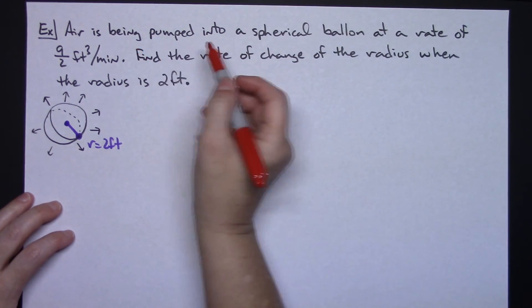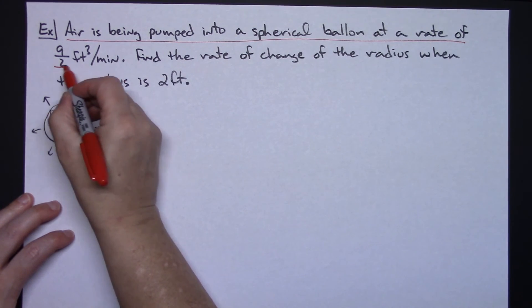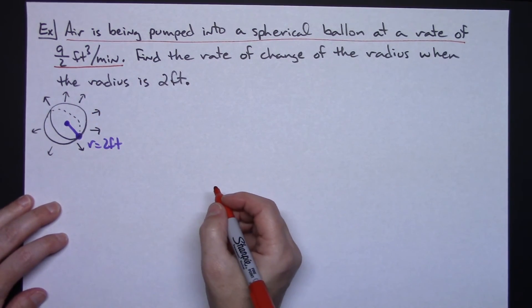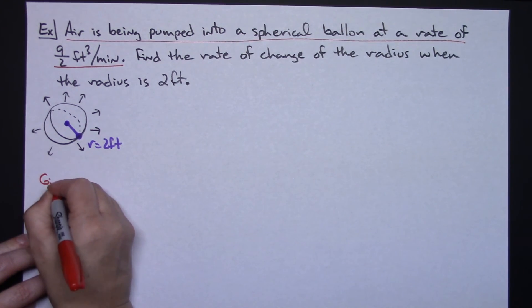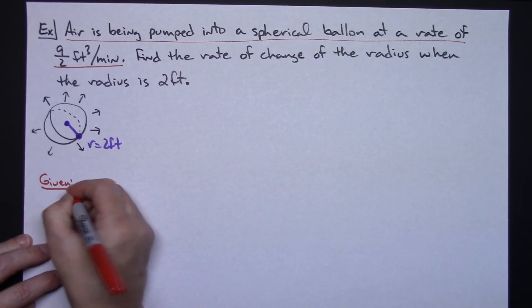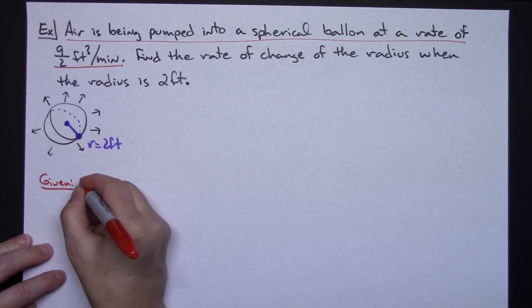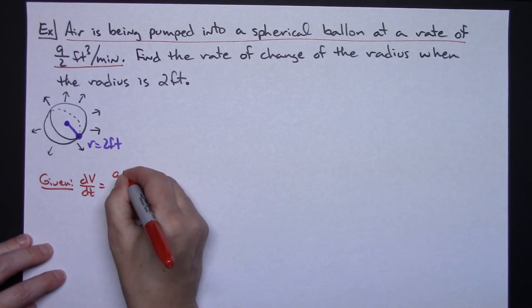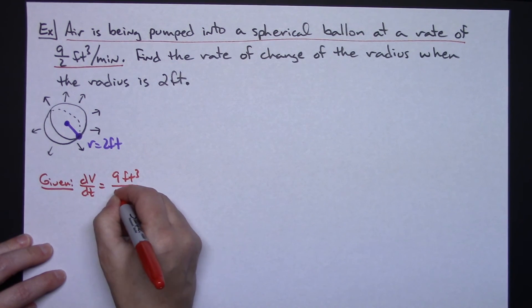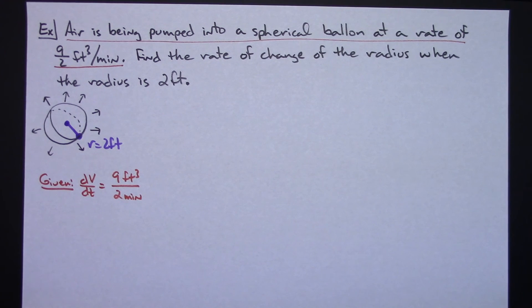So air is being pumped into the balloon at a rate of 9/2 cubic feet per minute. So right there is my given. And we said that the volume is what's changing. So dV/dt is given to me at 9 feet cubed over 2 minutes. So there's my given.